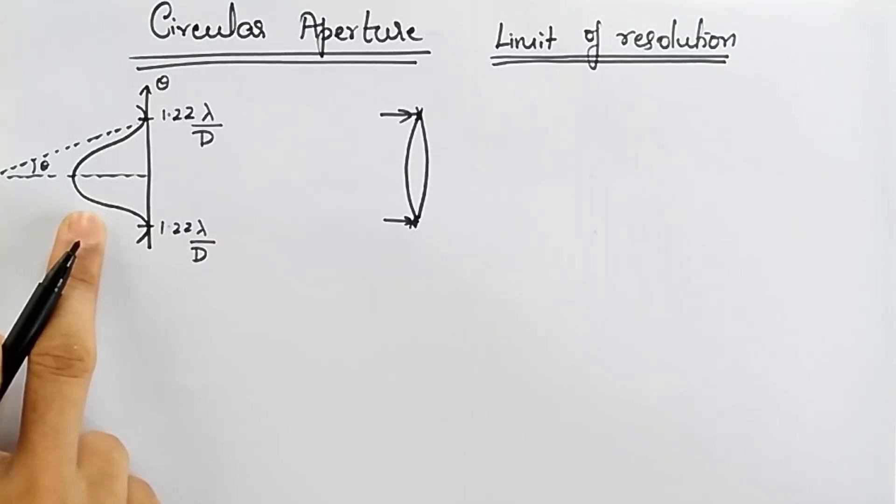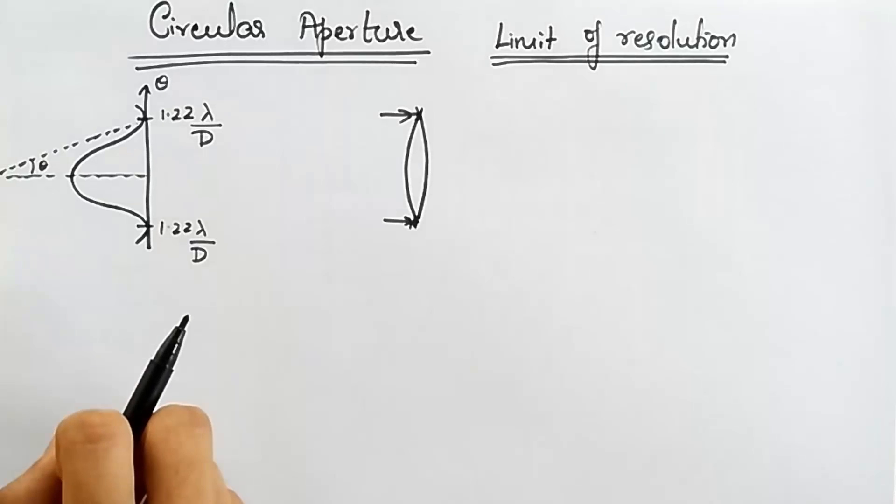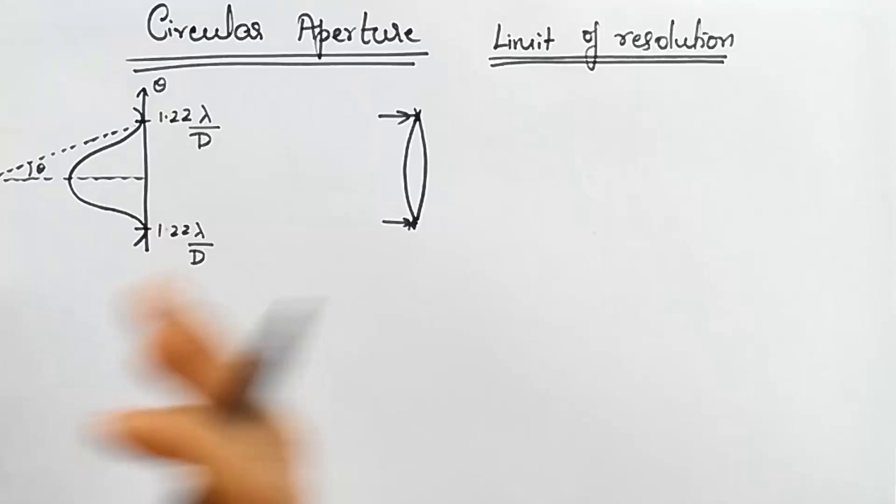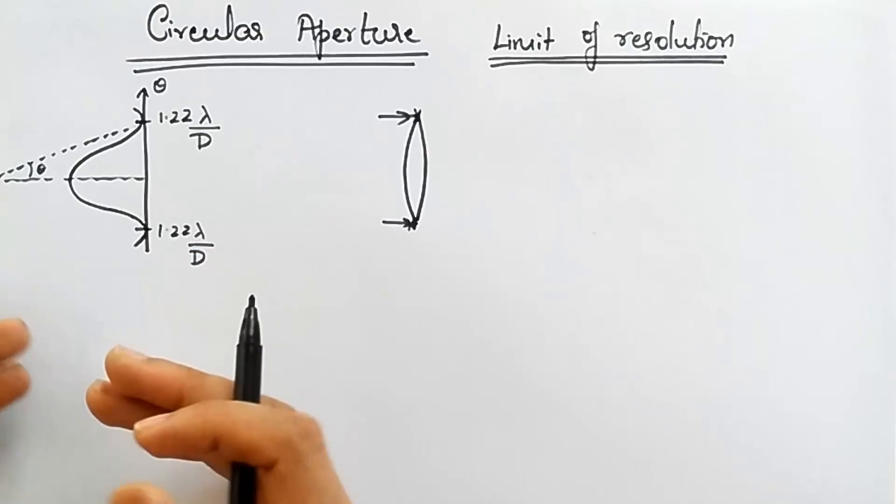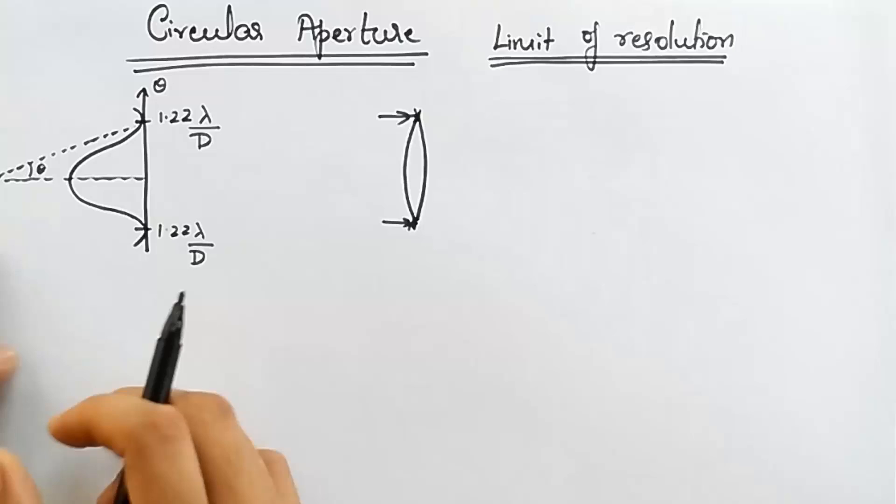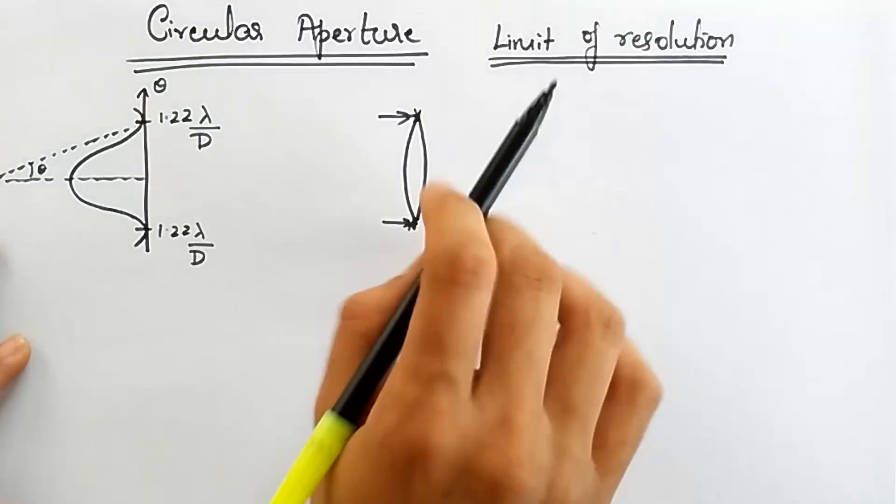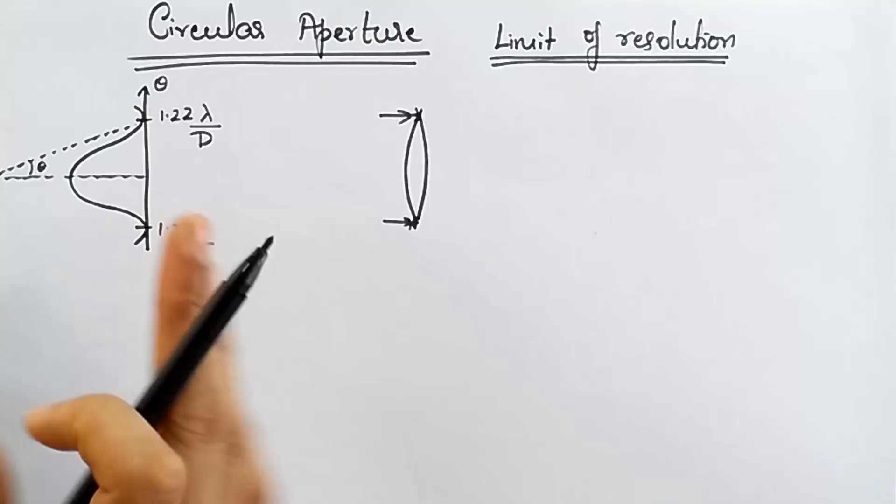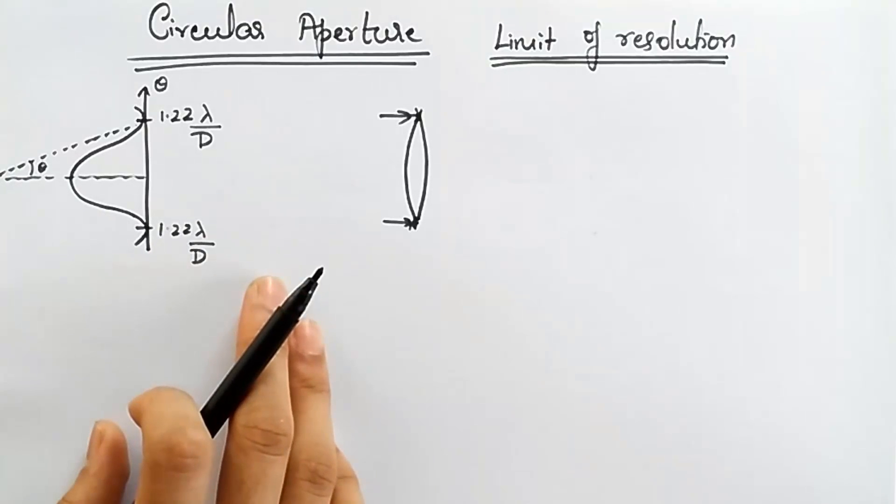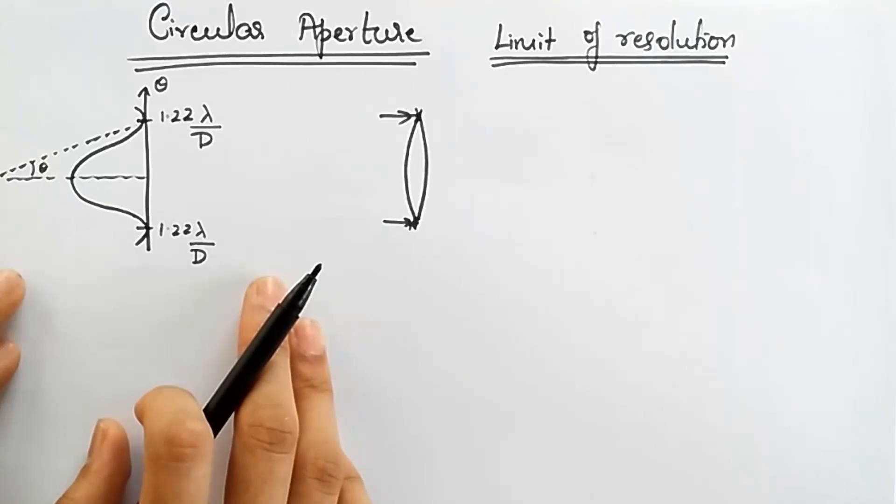Because of this what's going to happen is when you have two sources and they are very close to each other, the two diffraction patterns are going to overlap with each other and if the overlapping is too much then your optical instrument will not see it as two sources, but you'll see it as one source. And so what we're going to talk about is what is the smallest separation that the two sources can have such that you can just see them to be two sources and that is given by Lord Rayleigh and we call it as Rayleigh's Criterion.